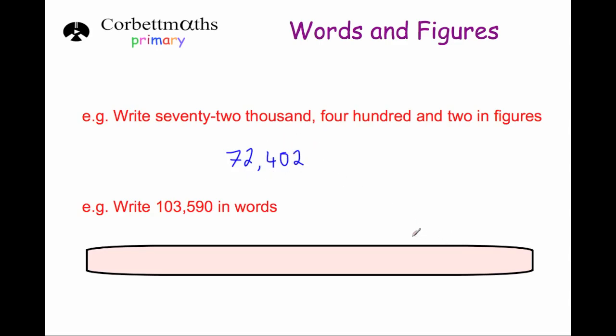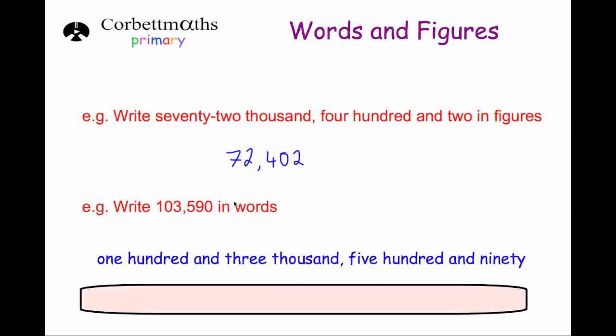And our last question says to write this number in words. Well, it's got one hundred and three thousand. So we'll write that down first of all, one hundred and three thousand. And then we'll put a comma, and then five hundred and ninety. So the answer is one hundred and three thousand, five hundred and ninety. And that's it.